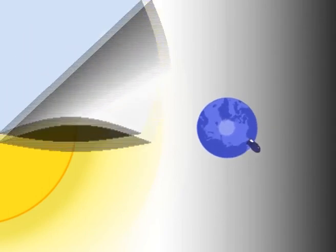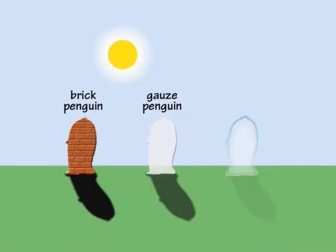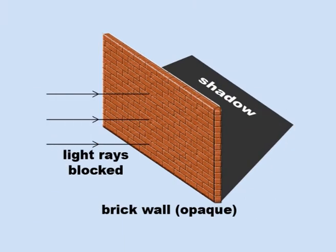If you compare objects made of different kinds of materials, you will see they cast different kinds of shadows. Opaque objects, such as bricks, do not allow any light to pass through, so their shadows are very dark.